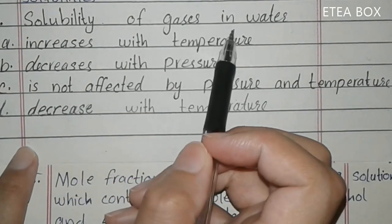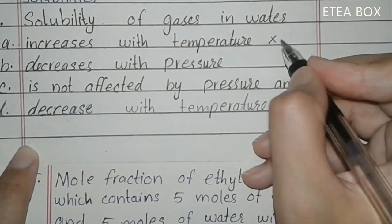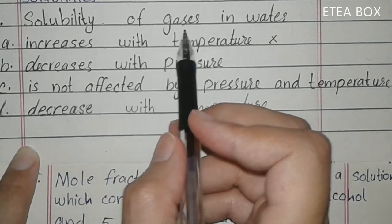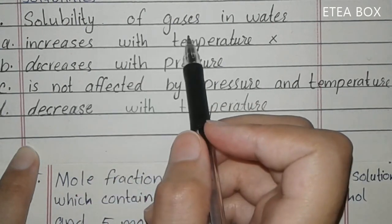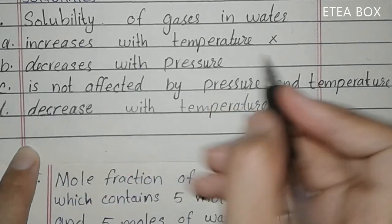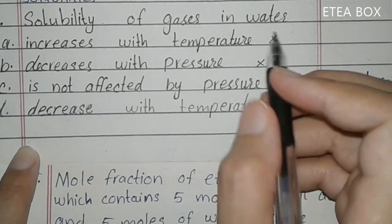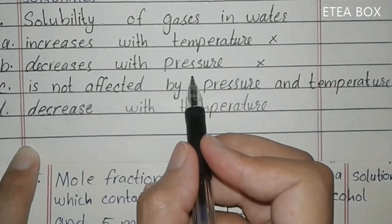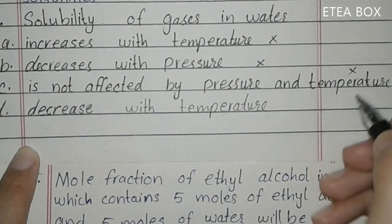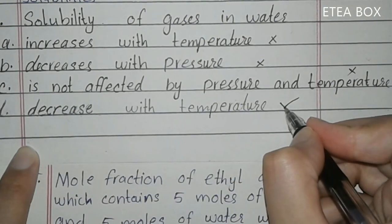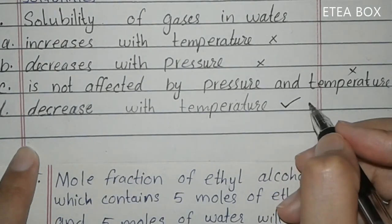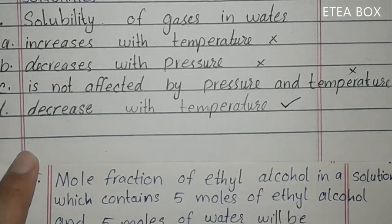MCQ 19: solubility of gases in water — option A (increases with temperature) is incorrect, because when we increase temperature, kinetic energy of gases increases and their solubility decreases. Option B (decreases with pressure) is incorrect because solubility of gases in water increases with pressure, not decreases. Option C (not affected by pressure and temperature) is also incorrect. Option D (decreases with temperature) is correct. Option D is correct.